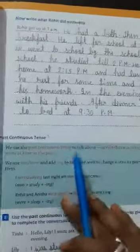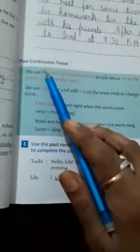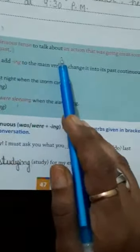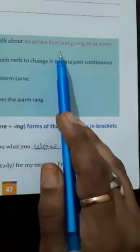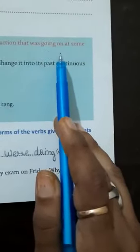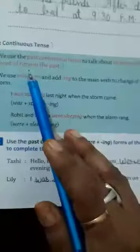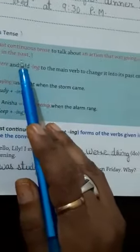Now, past continuous tense. We use the past continuous tense to talk about an action that was going on at some past time in the past.